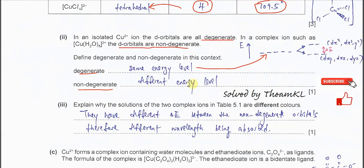Non-degenerate means different energy levels. The D orbitals now are not at the same level. We call this non-degenerate. This is the definition you must know.